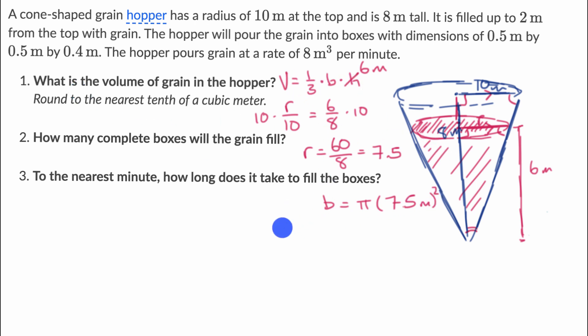And so the volume, to answer the first question, the volume is going to be one third times the area of the base, this area up here, which is pi times 7.5 meters squared times the height, so times six meters.